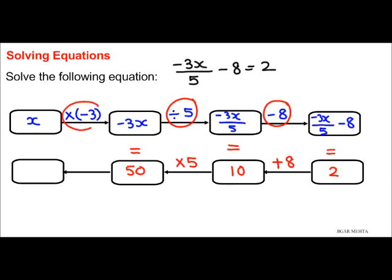Next, multiplication by negative 3 means division by negative 3, as we are doing the opposite operations. So, 50 divided by negative 3 equals x. So, my x is 50 divided by negative 3, or I can write x as negative 16 and 2 over 3.